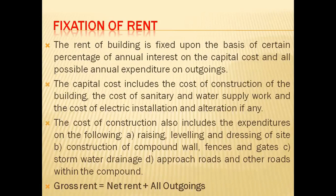Next is rent fixation. Rent fixation means you have to fix a proper rent for someone for a property. That is known as the fixation of rent. In this fixation of rent, many things are included: raising, leveling, pressing, construction, and gates. You have to include all these things and put rent on it. Gross rent means net rent plus all outgoings. Net rent means gross income minus outgoings.